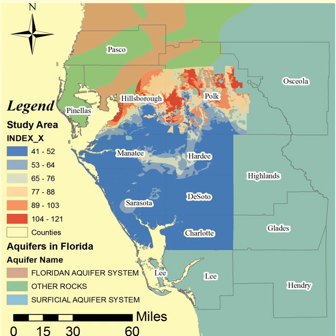GIS in environmental contamination is the use of GIS software in mapping out the contaminants in soil and water using the spatial interpolation tools from GIS.